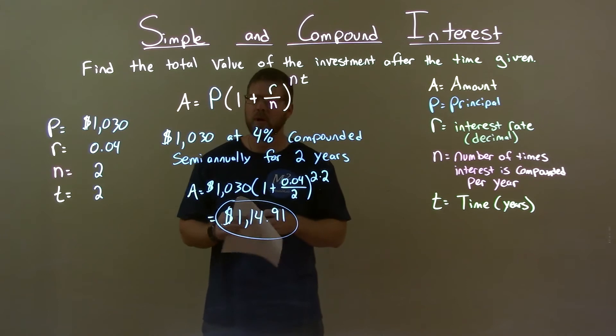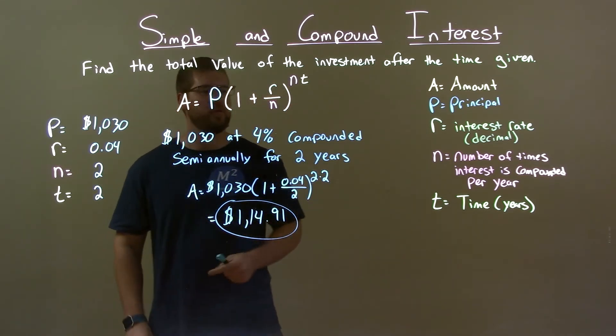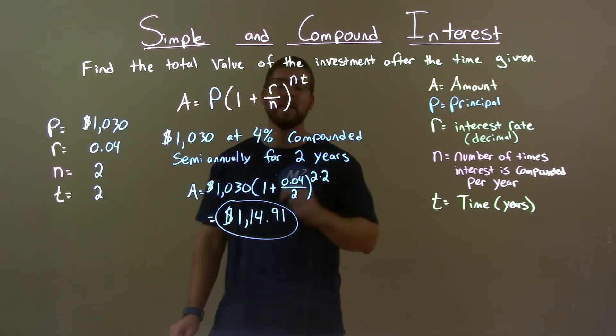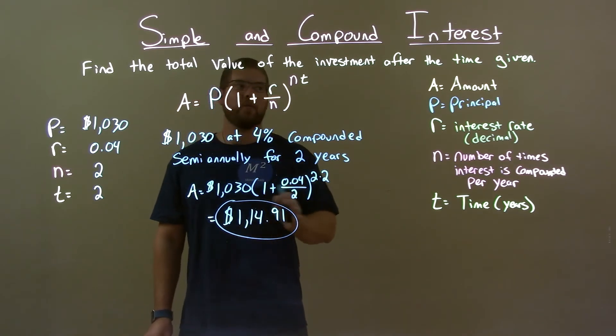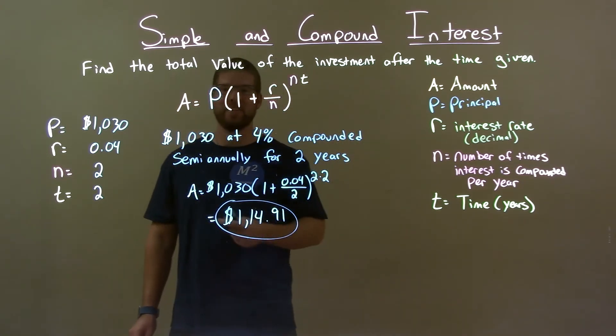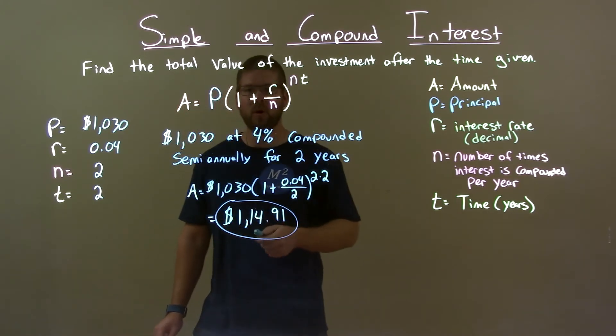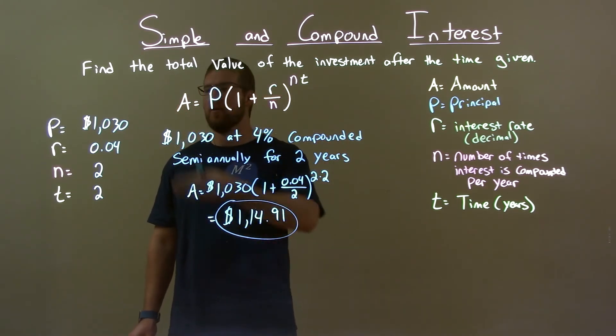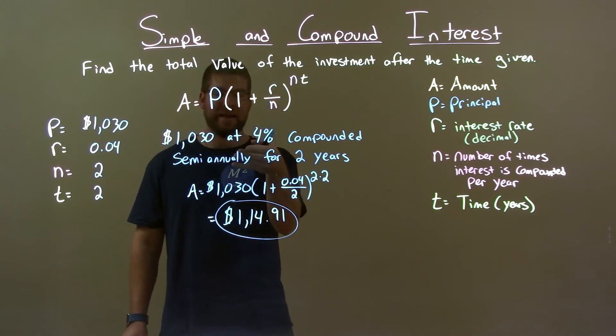So quick recap, we're given $1,030 at 4% compounded semi-annually for two years and we need to find the value of the investment after this time period. We use our compound interest formula, we find missing variables and we plug that in to get our answer.